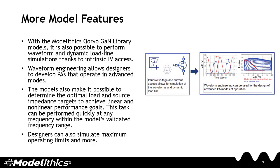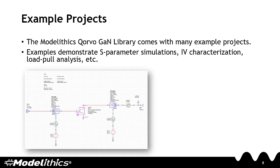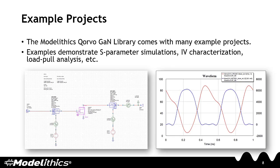Designers can also simulate maximum operating limits and more. The ModelLythics Corvo GAN library comes with many example projects that can help users get started. These examples demonstrate S-parameter simulations, IV characterization, load-pull analysis, plus others.